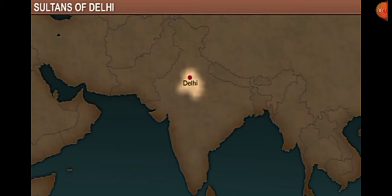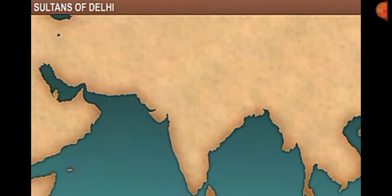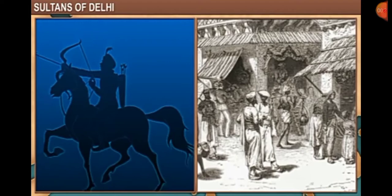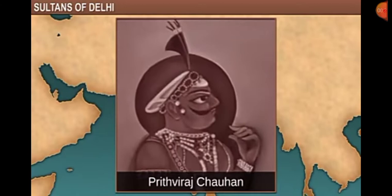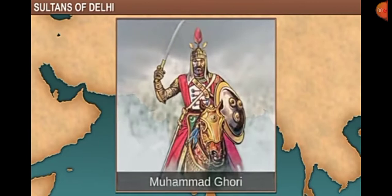However, Delhi did not become a major city until the 12th century. During the 12th century, the Chauhans conquered the city of Delhi and transformed it into an important commercial center. In 1192, with the defeat of Prithviraj Chauhan, Delhi again changed hands.